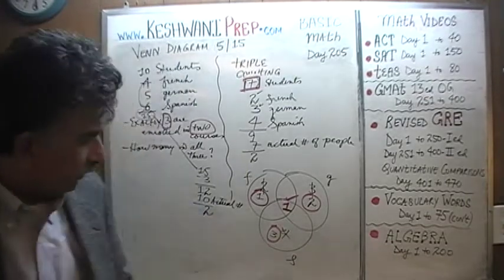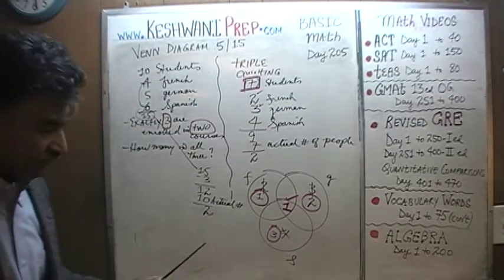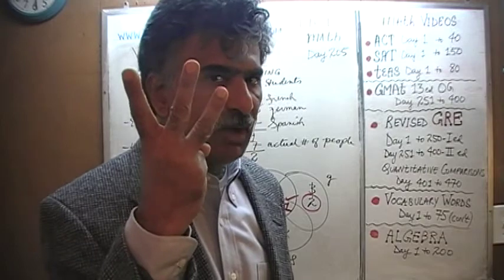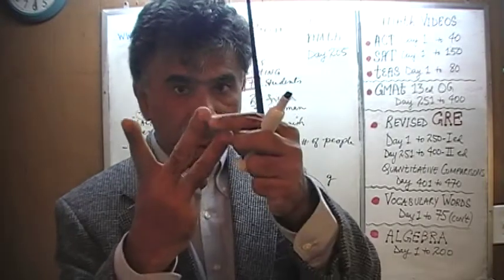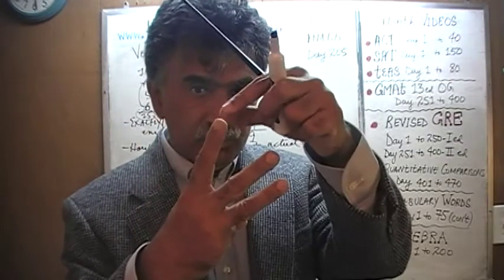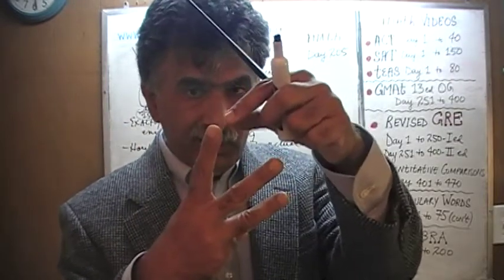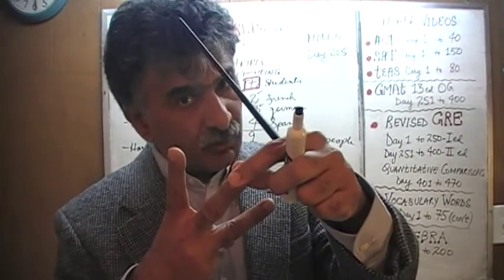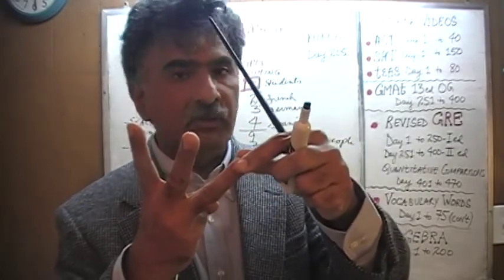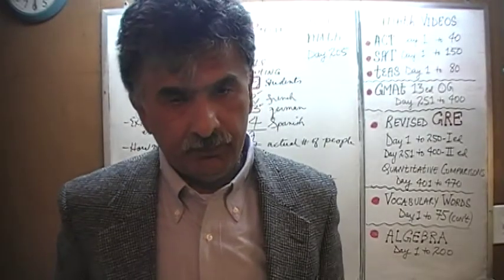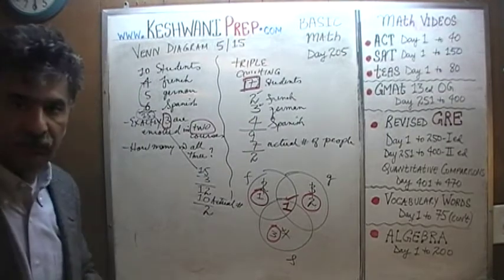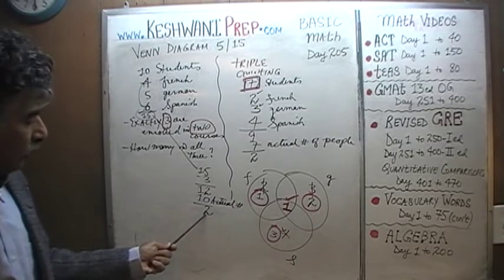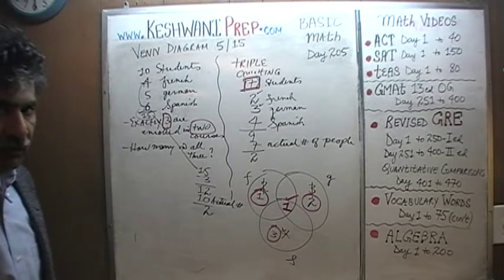What does that overflow of 2 tell us? It tells us that 1 person was counted as 3 — we are triple counting 1 person. We counted him once as a French student, again as a German student, and a third time as a Spanish student. We counted him 3 times, which is why we have an overflow of 2. So the answer is: 1 person must have been enrolled in all 3 languages.